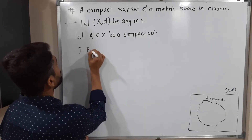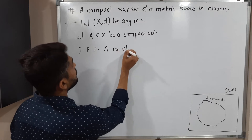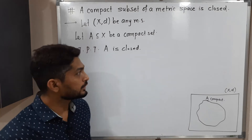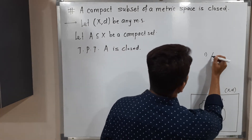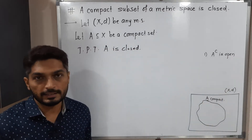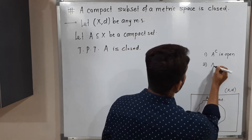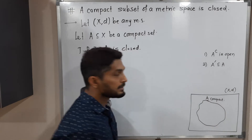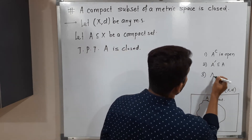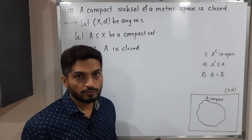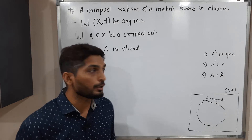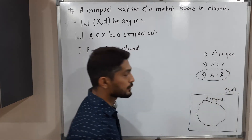So to prove that A is closed, there are various definitions of a closed set. The first one: if the complement of A is open, then we say the set is closed. The second definition: A′ subset of A — that means if the set A contains all its limit points, then it is a closed set. Third: if A equals Ā (closure of A), then also we say the set is closed. Here I am going to use this third definition.